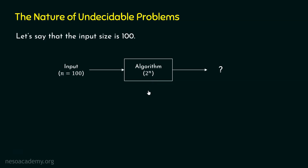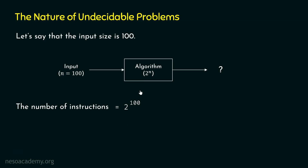First, we need to know the number of instructions executed by this algorithm. Let's assume that the number of instructions is equal to 2 to the power of n, so the number of instructions is equal to 2 to the power of 100 because n is 100. Now we know the number of instructions that need to be executed. Let's say we have the world's fastest computer and we want to execute this algorithm on it.